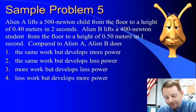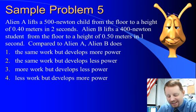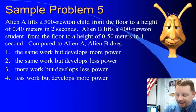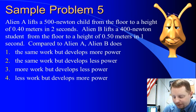One last problem. You can never go wrong with aliens. Alien A lifts a 500 newton child from the floor to a height of 0.4 meters in 2 seconds. Compared to Alien A, Alien B does what? Well, if Alien A lifts a 500 newton child from the floor to a height of 0.4 meters in 2 seconds...